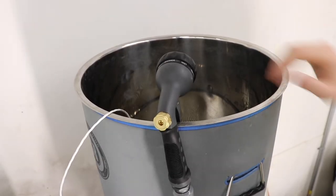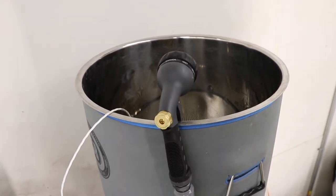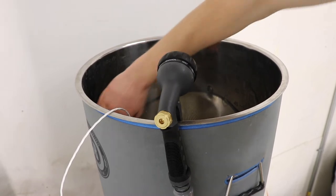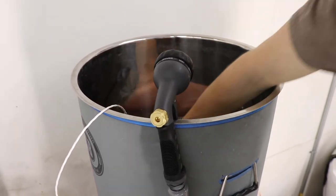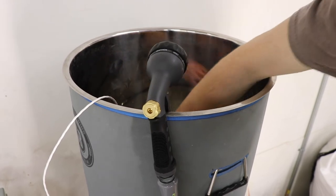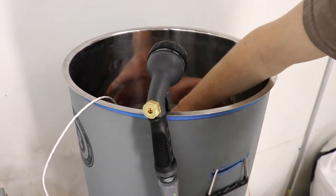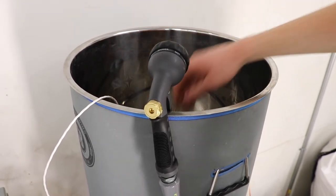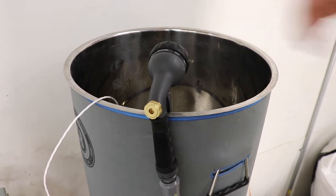You'll want to monitor the grain bed throughout germination at least once a day but ideally twice. Stop by and give the grain a few turns with your hand. Be sure to get down into the corners near the false bottom. If rootlets form without regular turning, barley will form tight clumps that make the drying process a bit less consistent.